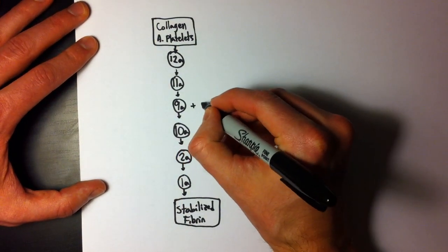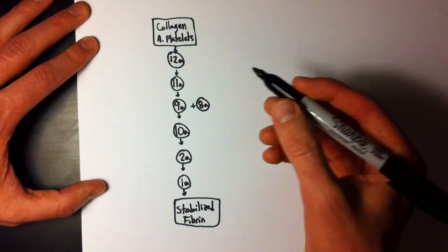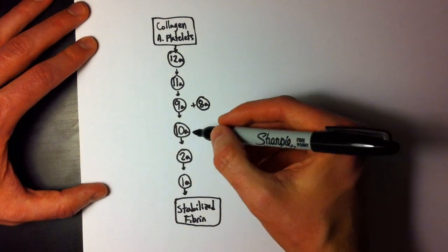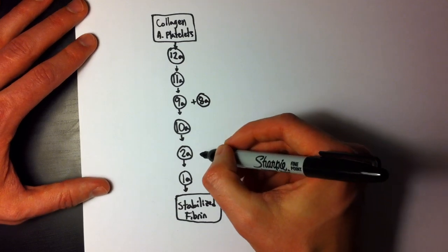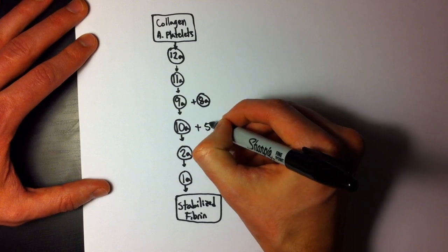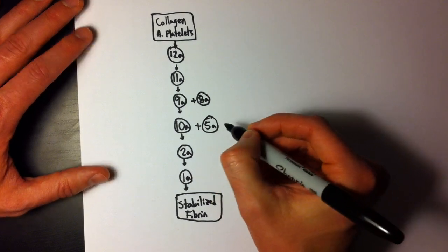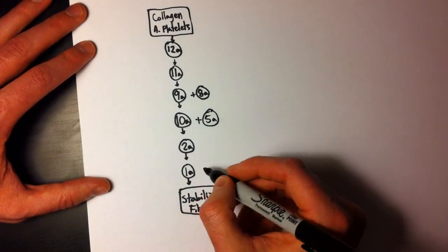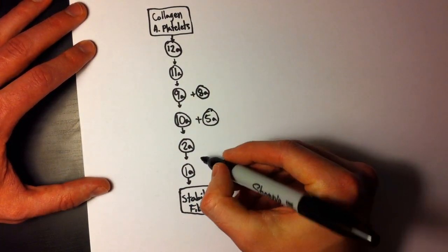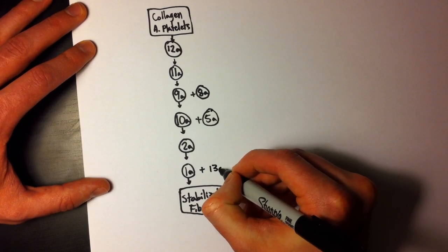So I'll just write in 8A. And you know that 8A comes from 8. 10A, in order to convert prothrombin to thrombin, requires 5A, which of course comes from 5. It's not rocket science. And then 1A, in order to become stabilized, it requires the help of factor 13A.